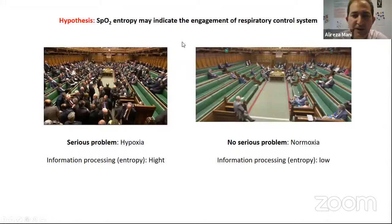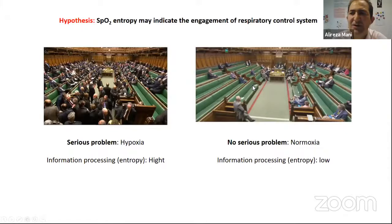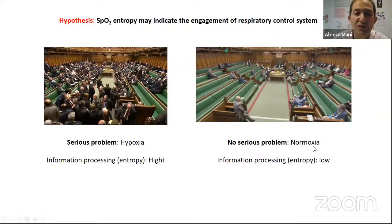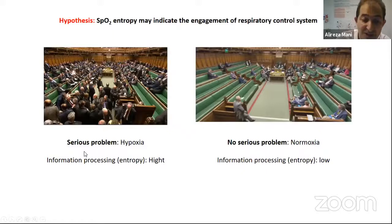The hypothesis is that SpO2 entropy indicates engagement of the respiratory control system. By analogy, consider a parliament — when there is no challenge, there is not much controversy or information processing. When a political problem arises, members must discuss and process much more information. Similarly, in normoxia we don't need to engage the control system much, but in hypoxia we expect to see much more information processing — and because information processing is measured by entropy, we expect to observe more entropy as well.